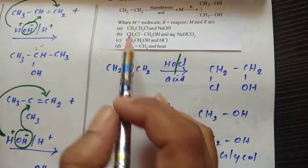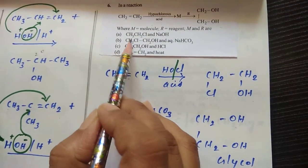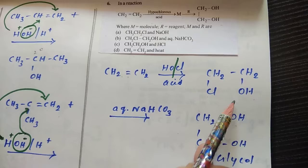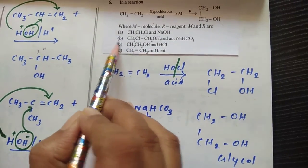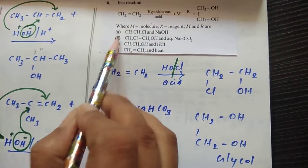In this option, they are not giving this product. In option B they gave CH2Cl single bond CH2OH. So we have to rule out A, C, D.